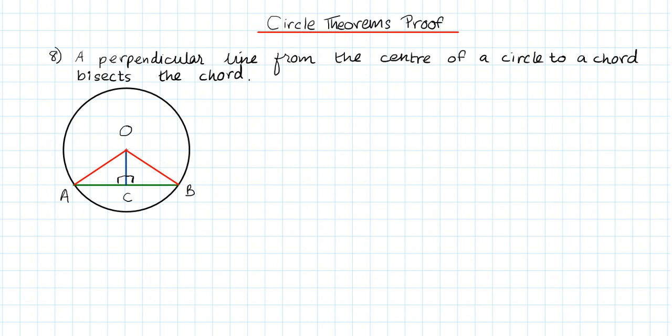And OC is a perpendicular line that intersects the chord AB at the point C. Okay, let's get started. So what we're going to do is, in order to prove this circle theorem, we're going to try and prove the two triangles OAC and triangle OBC are congruent. So we're going to start off with our opening statement.